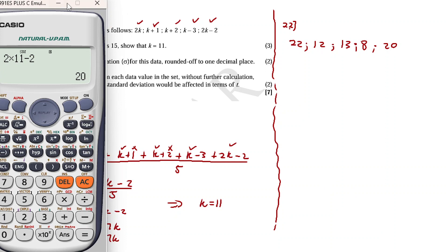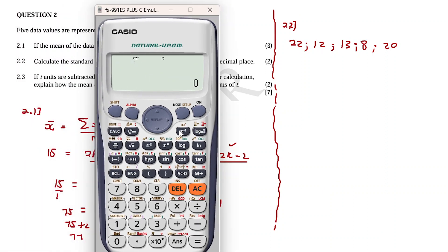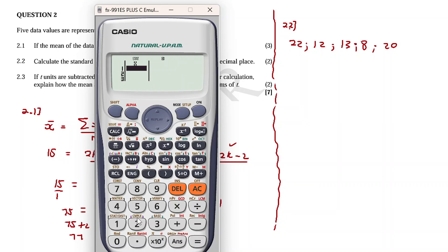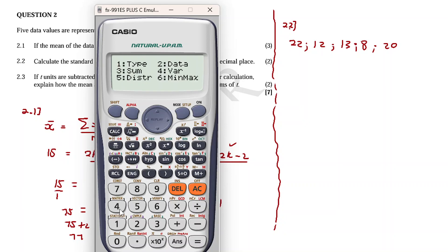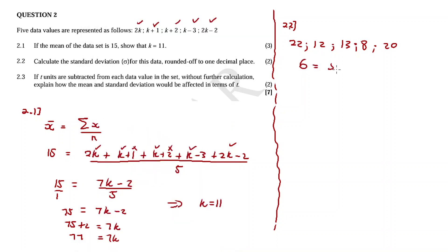On the calculator, enter the data: 22, 12, 13, 8, 20. Then press Shift, then the statistics menu, select number 4 for variance, and number 3 for standard deviation. The standard deviation comes out as 5.22, which rounded off to one decimal place gives an answer of 5.2.